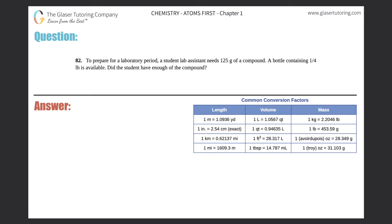Number 82. To prepare for a laboratory period, a student lab assistant needs 125 grams of a compound. A bottle containing one-fourth pound is available. Did the student have enough of the compound?